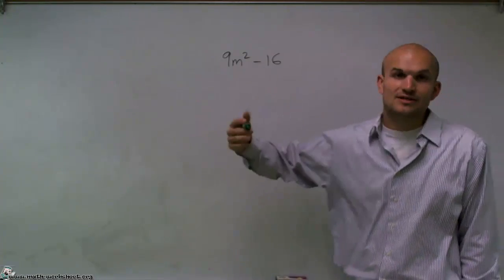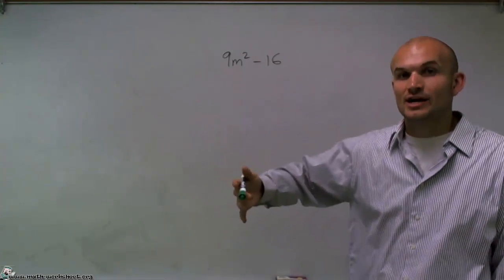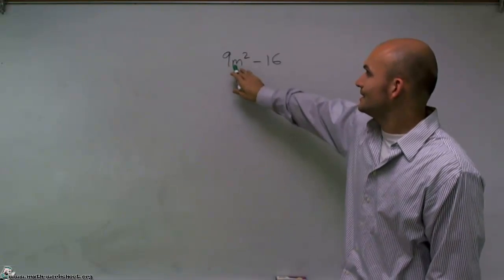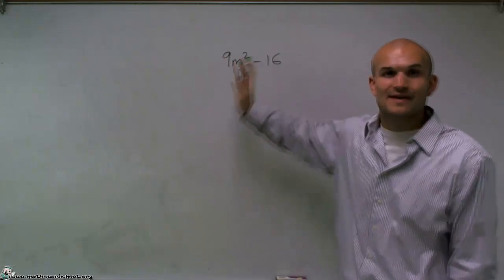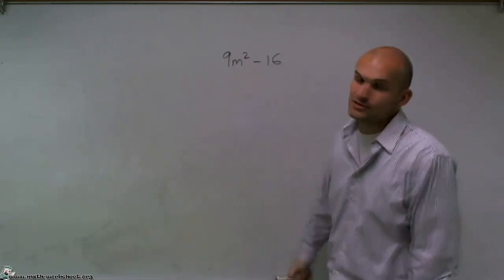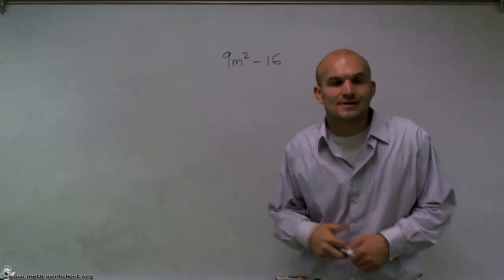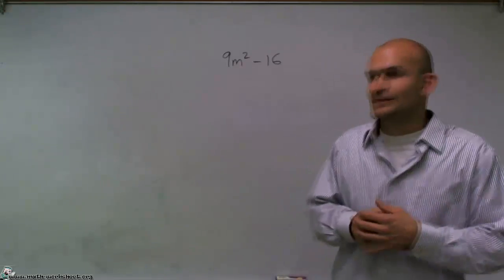And for us to factor out GCF, the terms have to share the same value. What I notice here is I have an m squared, but here I don't have an m, so I can't factor out an m. I also look at these two numbers, 9 and 16 don't share any common factors. So I can't factor out any number that they share.